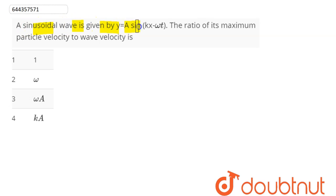given by y = A sin(kx - ωt). The ratio of its maximum particle velocity to wave velocity is... The equation is y = A sin(kx - ωt), and we have to find the ratio of